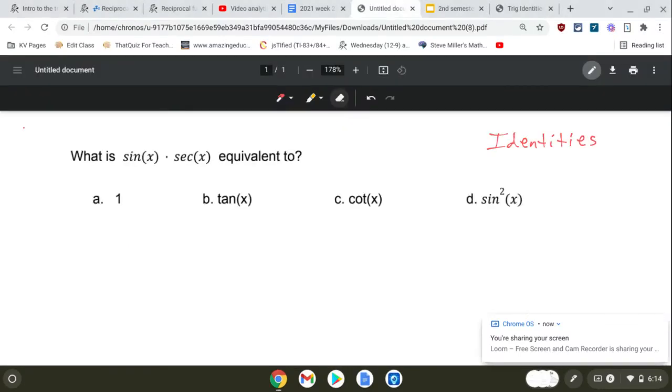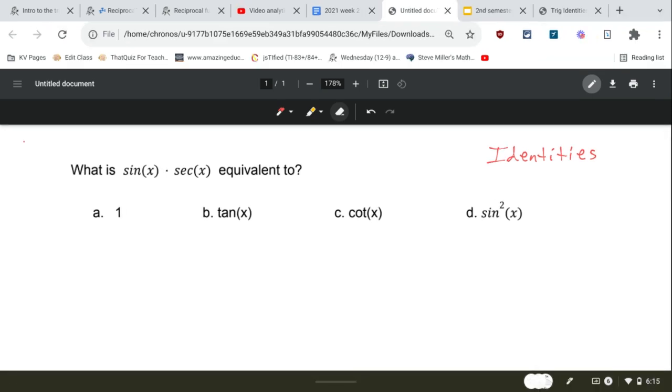Okay, so we're going to look at simplifying some trigonometric expressions. Basically, we're starting with sine of x times secant of x, and we're wanting to reduce that down to one of these four options below.